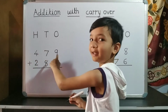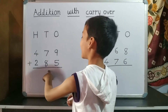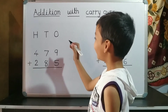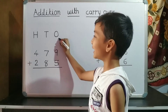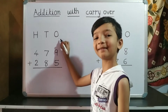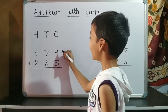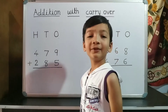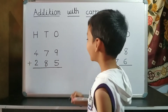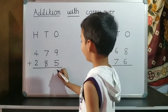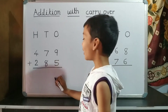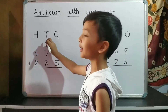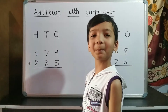479 plus 285. First we do addition of one's place. 9 plus 5 is 14. So we write 4 on one's place and 1 carryover to ten's place.